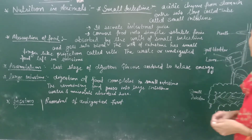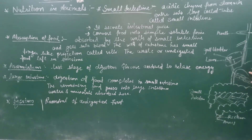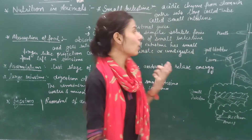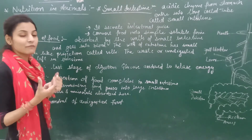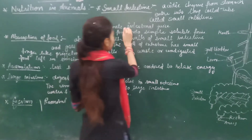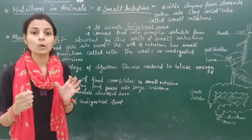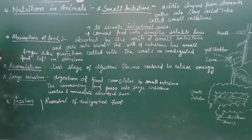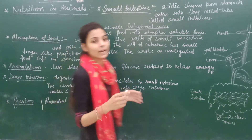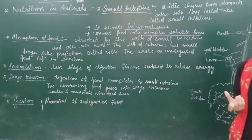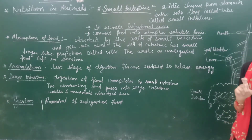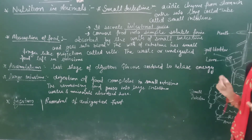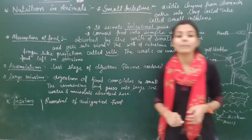Next is our small intestine. The acidic chyme present in the stomach enters the small intestine. The intestinal juice is secreted. It changes complex food into a simpler soluble form. Next is the absorption of food. In the small intestine, there are finger-like projections present, called villi, which absorb the food into the blood.